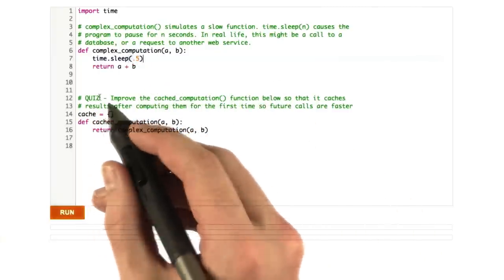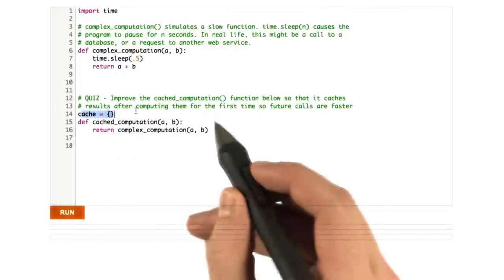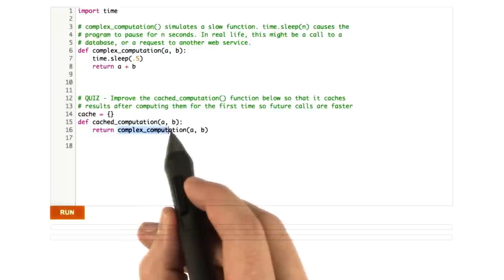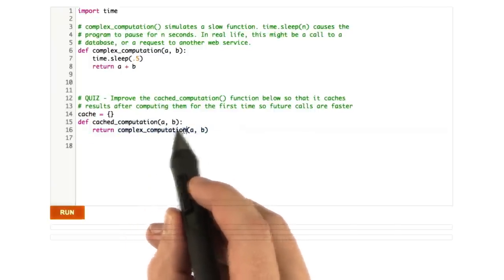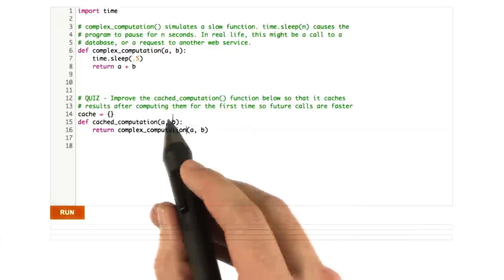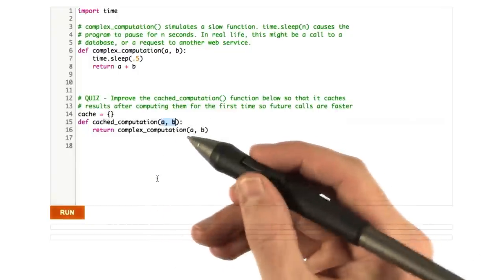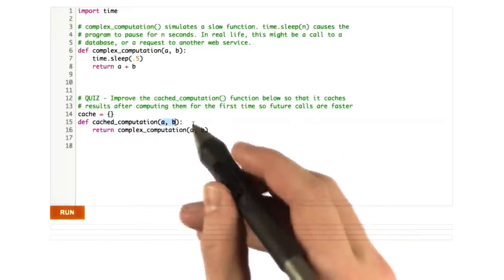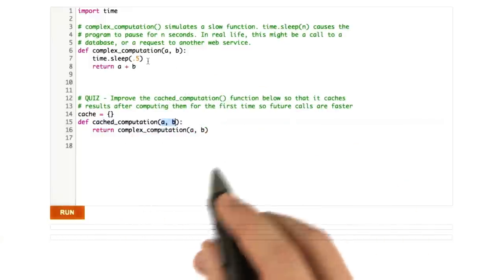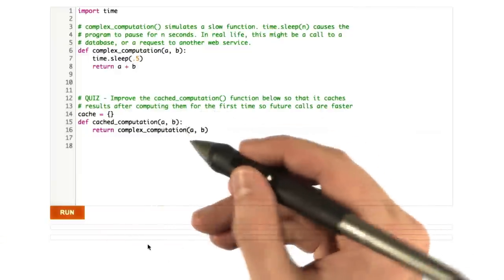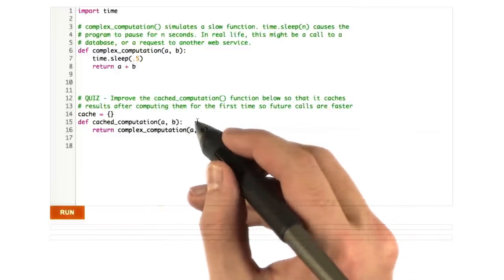So, what I want you to do is use a dictionary as a cache, and it's defined right here. It's called cache. And I want you to make this function cached_computation. Use this cache to store the results of calling complex_computation on different inputs. So, if we pass in the same inputs a and b twice, I want the second running of this function to use the cache. The first one will do the actual computation. And we'll be grading this by running, picking different values of a and b, seeing how long the first one takes to run, and then seeing how long the second one takes to run. And the second one should run substantially faster.